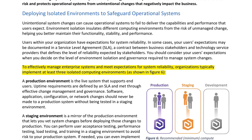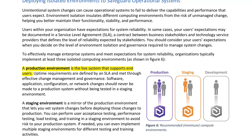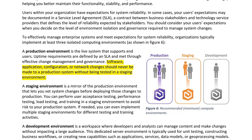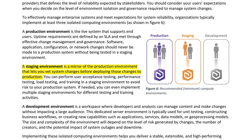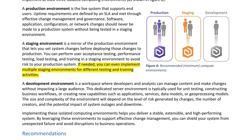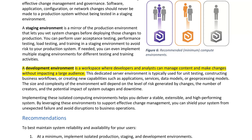To effectively manage enterprise systems and meet expectations for system reliability, organizations typically implement at least three isolated computing environments (Figure 6). A production environment is the live system that supports end users — uptime requirements are defined by an SLA and met through effective change management. Software, application, configuration, or network changes should never be made to a production system without being tested in a staging environment first. A staging environment is a mirror of the production environment that lets you vet system changes before deploying them to production. You can perform user acceptance testing, performance testing, load testing, and training in a staging environment.